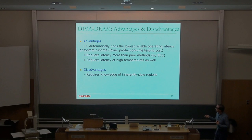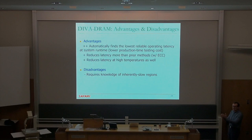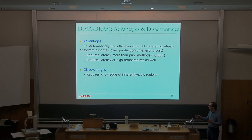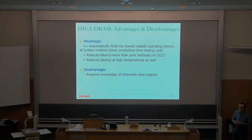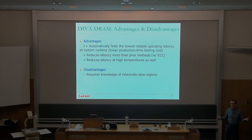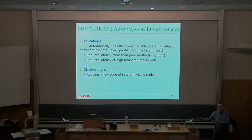One clear disadvantage is you require knowledge of inherently slow regions. If the manufacturer provides that, it's a lot easier. We need a better interface between the memory controller and main memory — information flow from the DRAM chip to the memory controller. This is not happening right now, but going forward it will happen more, especially with issues like RowHammer. Manufacturers are already providing, for example, how many activations a chip can tolerate in a special register in the SPD, such that the memory controller can read it. This interface is already becoming slightly better.